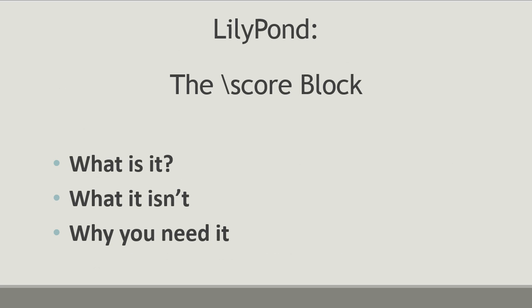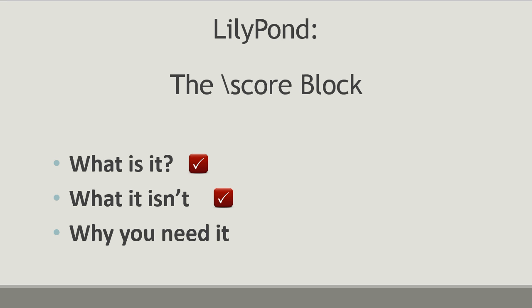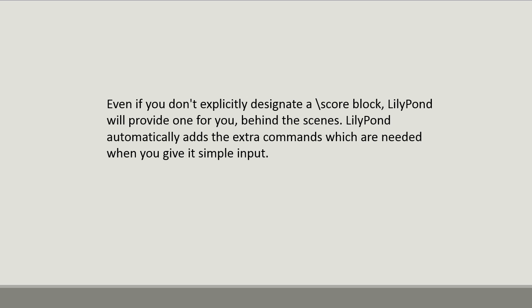So far we've taken a look at what the score block is and what it isn't. Now, on to the final bullet point — number three: every score needs a score block. But why do we need it if we haven't used it before in our examples? In all of my previous videos, we haven't yet added a score block to any of the examples. The answer is: you don't have to manually input a score block in order to output a file with no errors. Even if you don't explicitly designate a score block, LilyPond will provide one for you behind the scenes — it automatically adds the commands needed when you give it simple input.